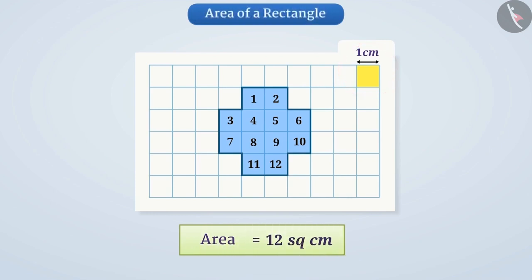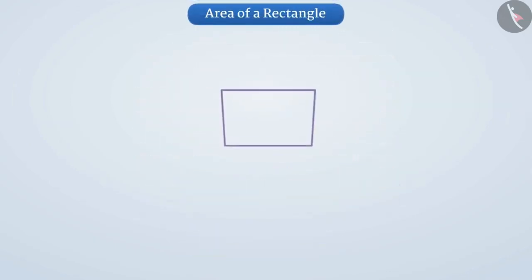Today we will discuss how to find the area of a rectangle. Look at this rectangle with length 6 cm and breadth 4 cm. Let's find its area.